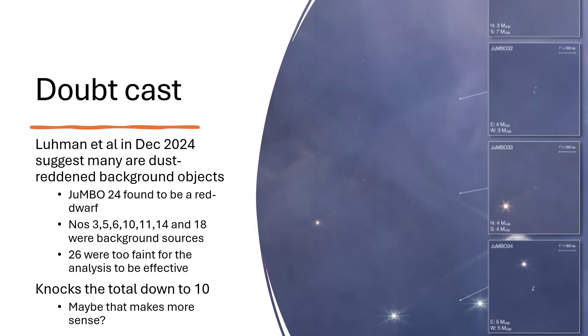And they found that poor old Jumbo 24 that the VLA had homed in on seems to be actually a red dwarf star in the background, being seen through the dust of the Orion nebula, making it look redder and creating that illusion in the spectrum. And the whole list of others there, numbers 3, 5, 6 and so on, were also background sources shining through the nebula.